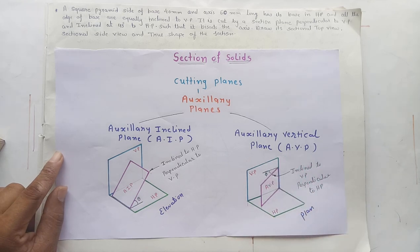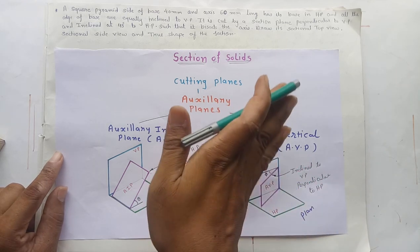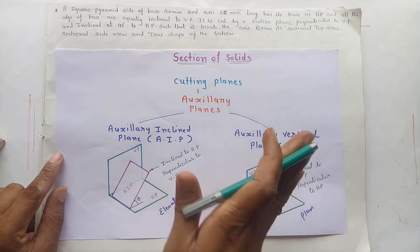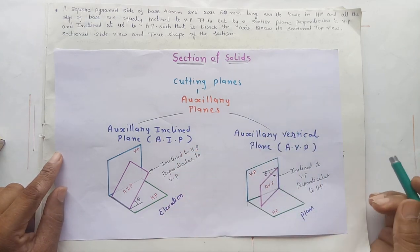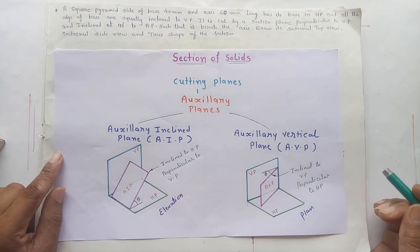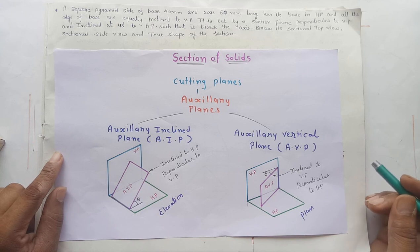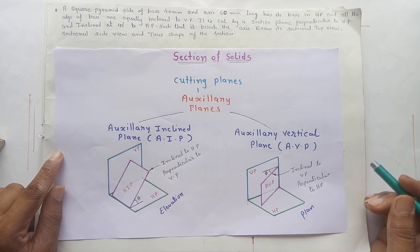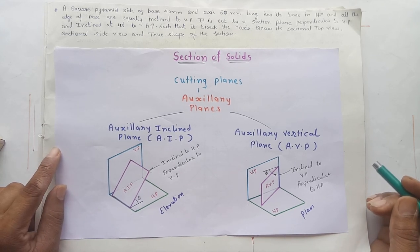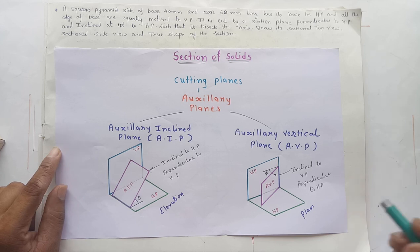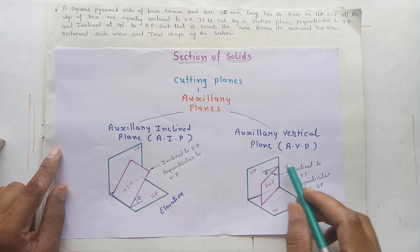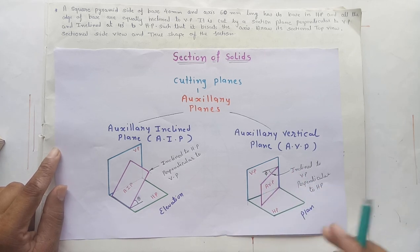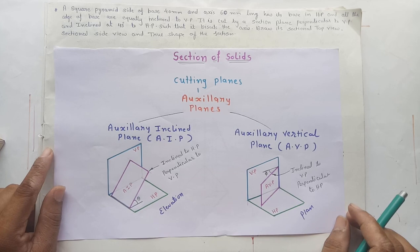The auxiliary vertical plane is a plane which is perpendicular to HP and inclined to VP. If the auxiliary vertical plane is given as a cutting plane in the section of solid, then we have to show that cutting plane in the plan. Now let us understand the section of solid by taking one example.